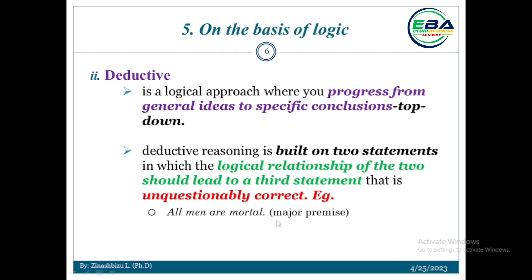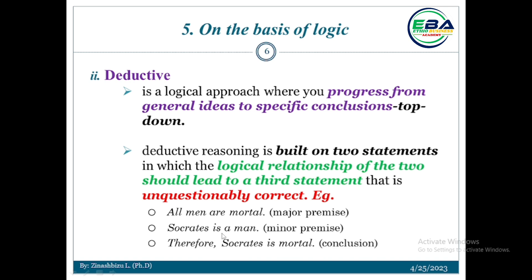Let's say the example: 'All men are mortal,' which is the major premise. 'Socrates is a man,' which is the minor premise — the second statement. We will establish a logical relationship between these two statements, and it will lead us to a third statement. Therefore, Socrates is mortal — which is the conclusion.